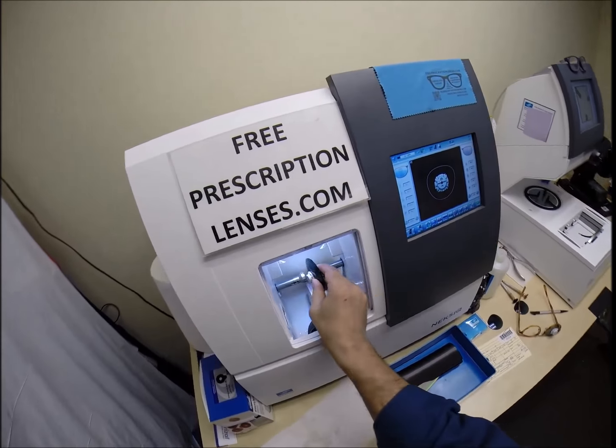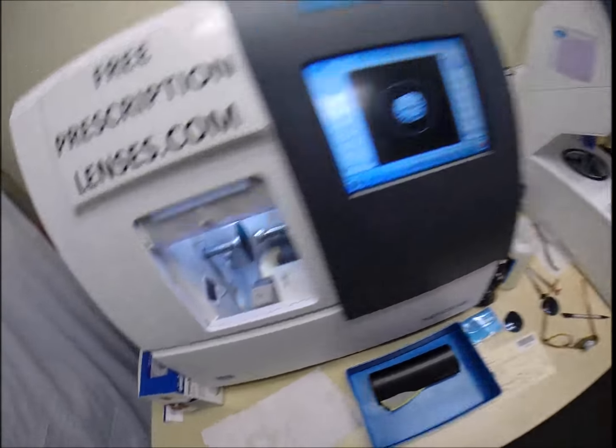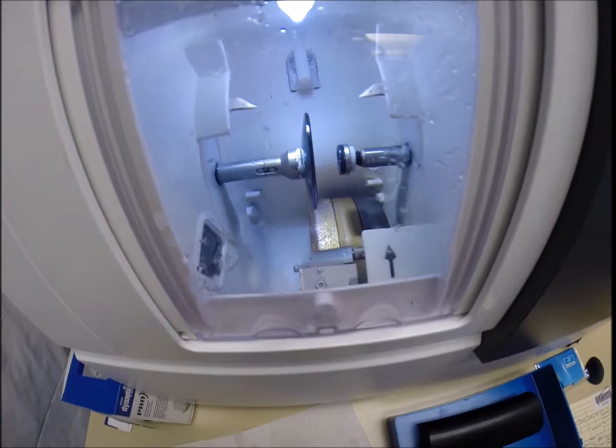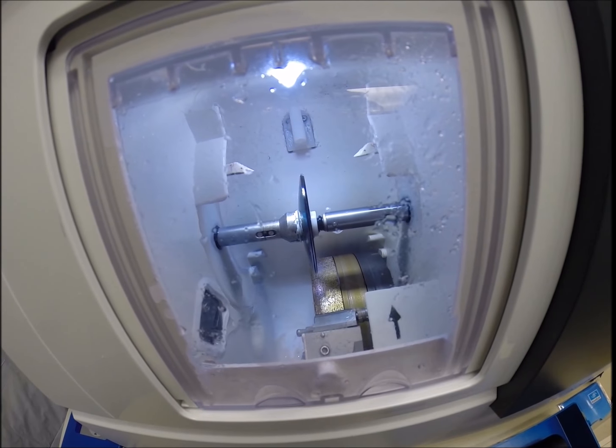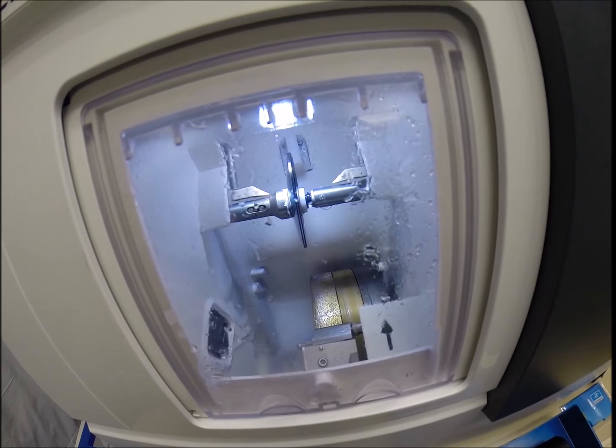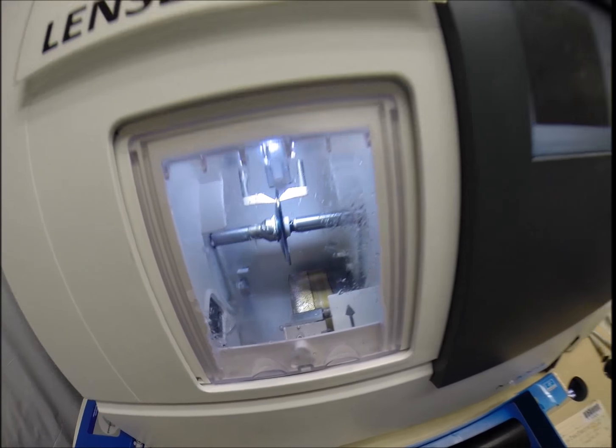Press that on there firmly. Hit the green arrow, which is start in every language. Just like before the door closes, the clamp shuts, and then the lens is going to be traced by the two white styluses, once again, just to make sure the lens is large enough to fit into the frame.